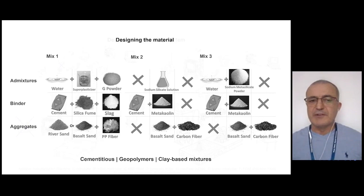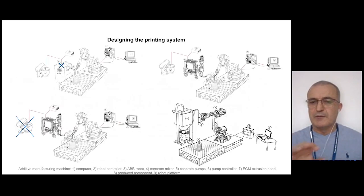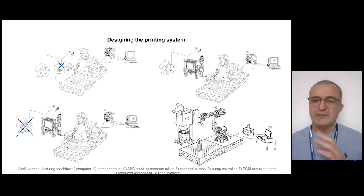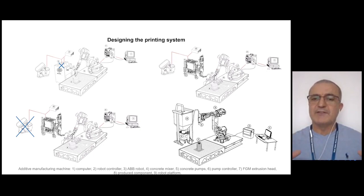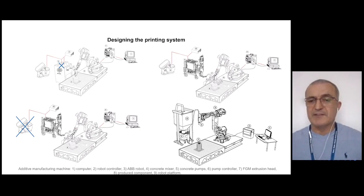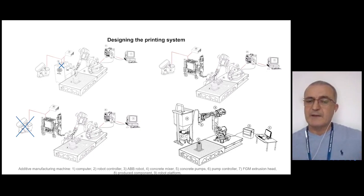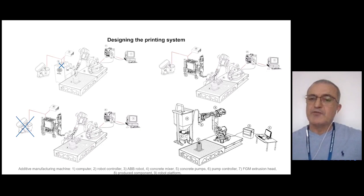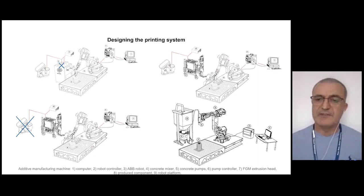We need to develop the printing system. This slide shows the evolution of our printing system from a very small-scale machine to our current machine. You need to design the system with an appropriate printing envelope — not too small to be unable to print buildings, and not too large, which would make it very difficult to deploy. In other words, you want a system that is easy to transport, deploy on-site, and move around the site.